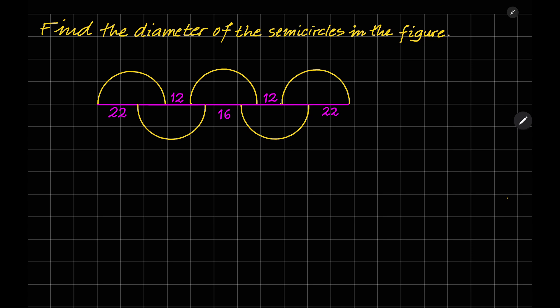Hello everyone. Find the diameter of the semicircles in the figure. Let's say this semicircle is semicircle A, this is semicircle B, and this is semicircle C, D, and E. Let's say this is the radius of the semicircle, r.